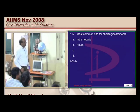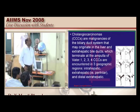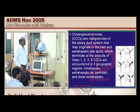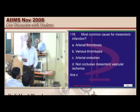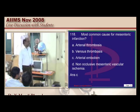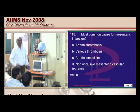For cholangiocarcinoma, the perihilar location is the most common site for bile duct cancer, and the intrahepatic location is the least common. Regarding mesenteric infarction — it is acute mesenteric arterial embolism that is most commonly responsible, rather than in-situ atherosclerosis.